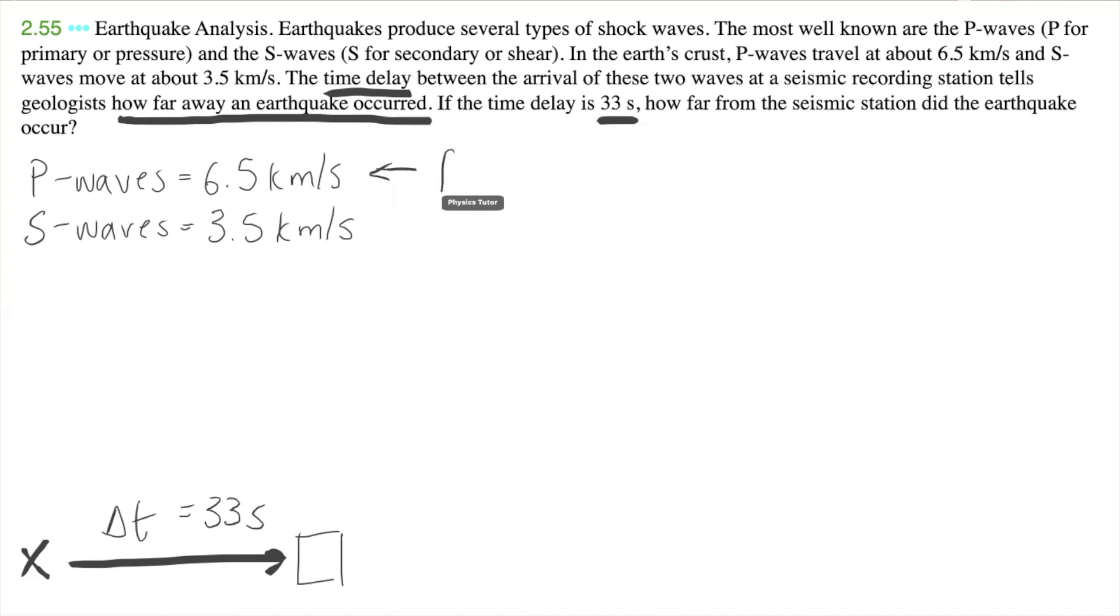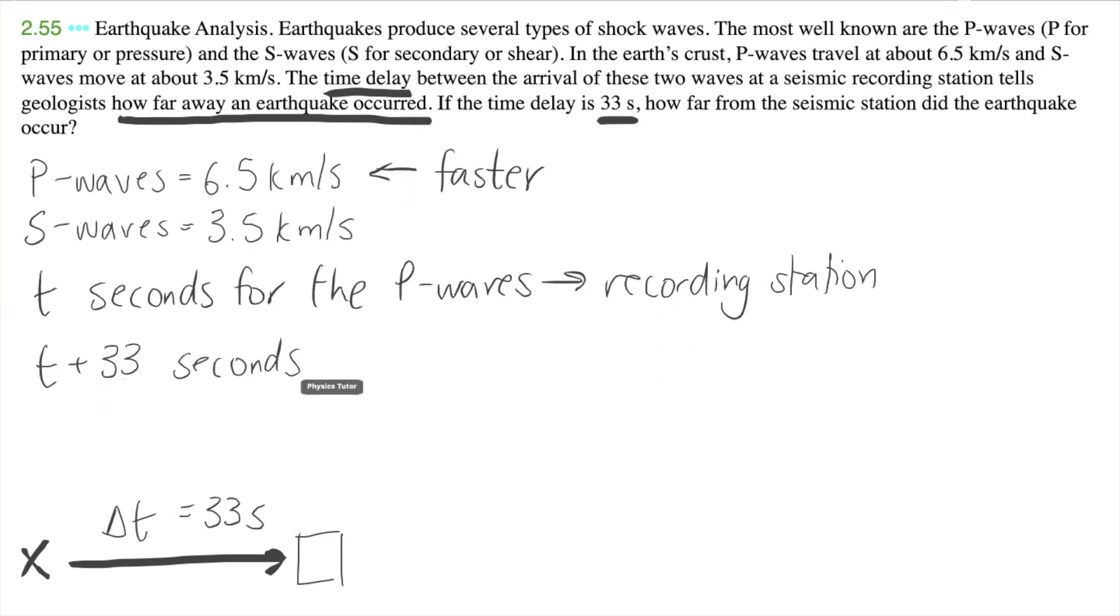So one thing, we know that P travels faster than S. So we know that we can say that if there was some, if it took T seconds for the P wave to get to the recording station, and the time delay was 33 seconds, then it would take T plus 33 seconds for the S waves to get to the recording station.